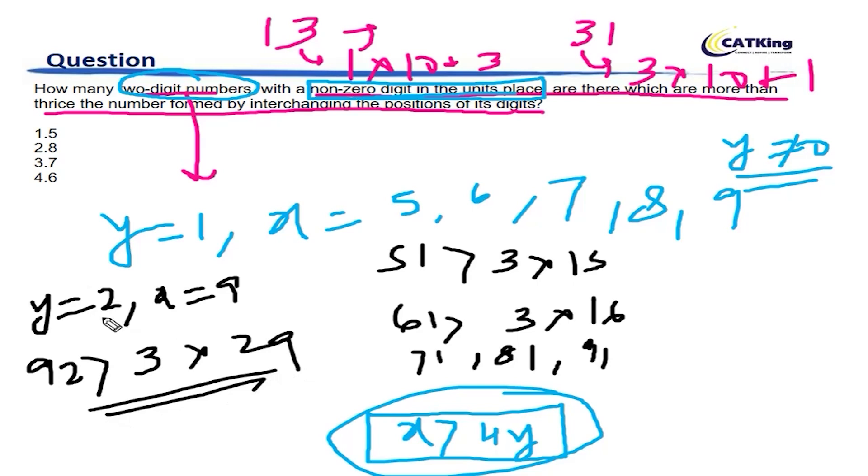For y is equal to 3, there is nothing possible. So y is equal to 2, x is equal to 9, that's 1 solution. And for y is equal to 1, there are 1, 2, 3, 4, 5—five solutions.